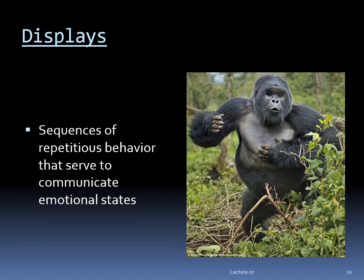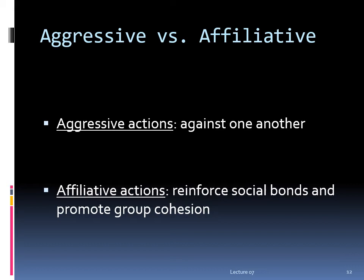Another common form of communication among primates is the display — a sequence of repetitious behavior that serves to communicate an emotional state. Among non-human primates, displays often communicate anger or aggression. The familiar image of a gorilla beating its chest is an aggressive display, as is chimps running in circles, tossing leaves, screaming, and dragging branches. When primates are interacting with one another, their actions can either be aggressive or affiliative. Aggressive actions are directed against one another, while affiliative actions reinforce social bonds and promote group cohesion.